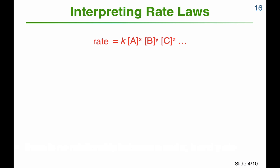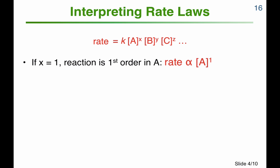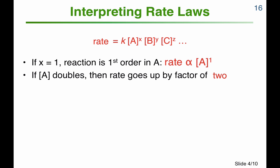The general rate law states that the rate is equal to a rate constant times the concentration of each reactant raised to a power X, Y, or Z. If X is 1, we talk about a first order reaction in A — the rate is proportional to the concentration of A. So if in our experiment we were to double the concentration of A, the rate would go up by a factor of 2. If we increase the concentration of A by 10, the rate would go up by a factor of 10.